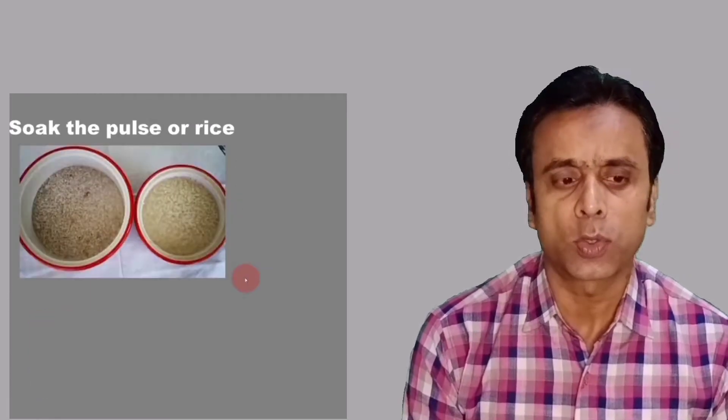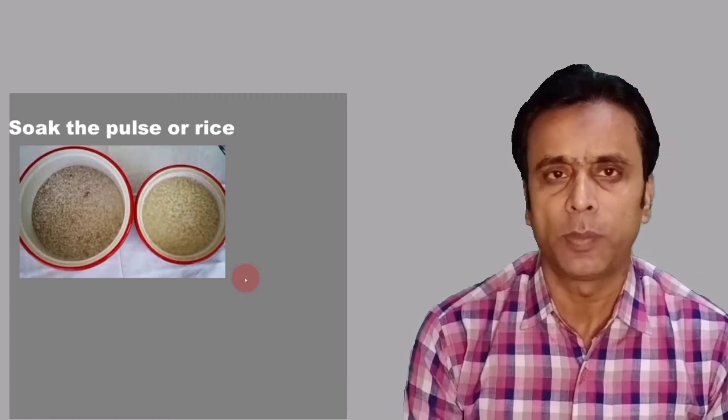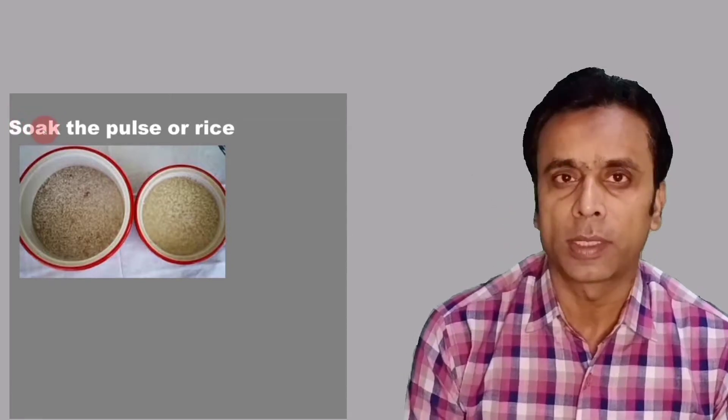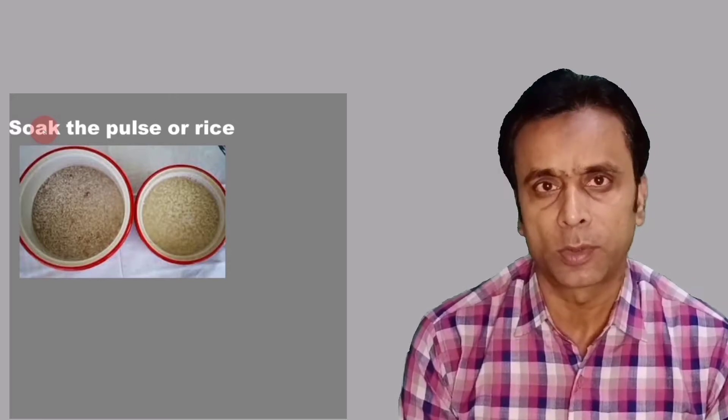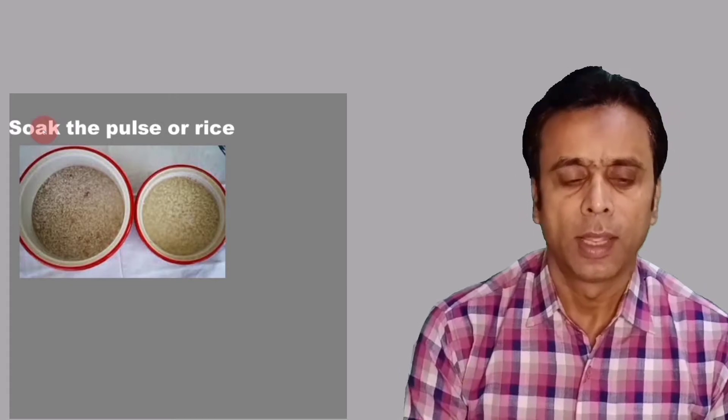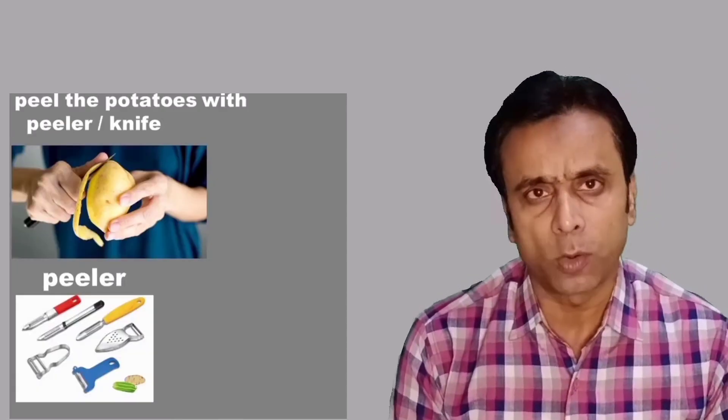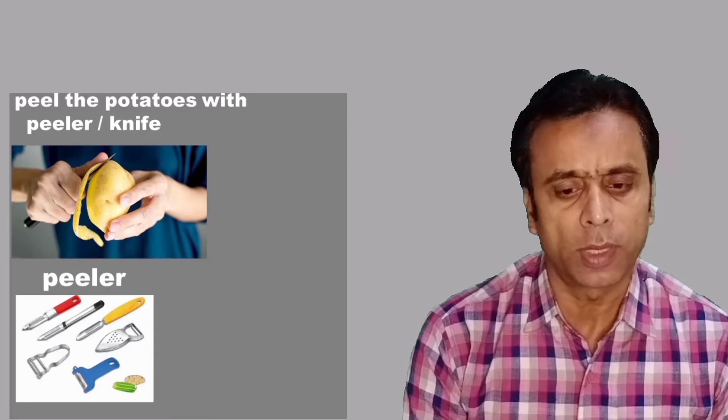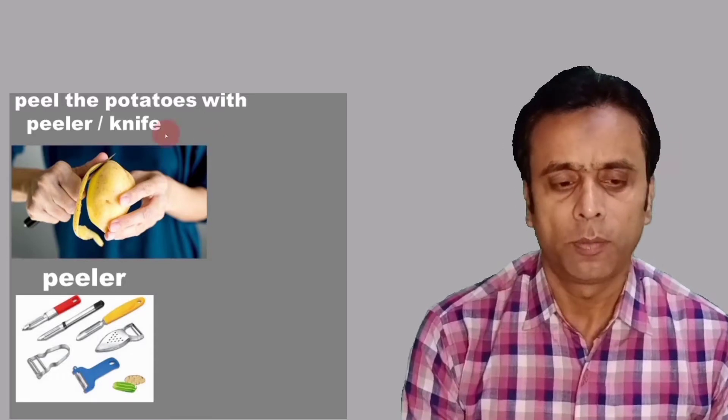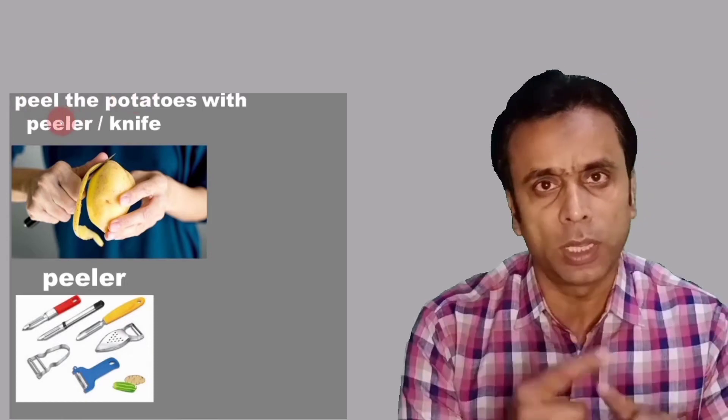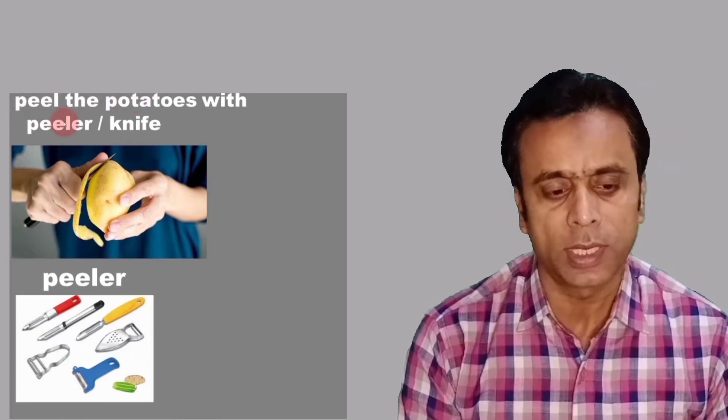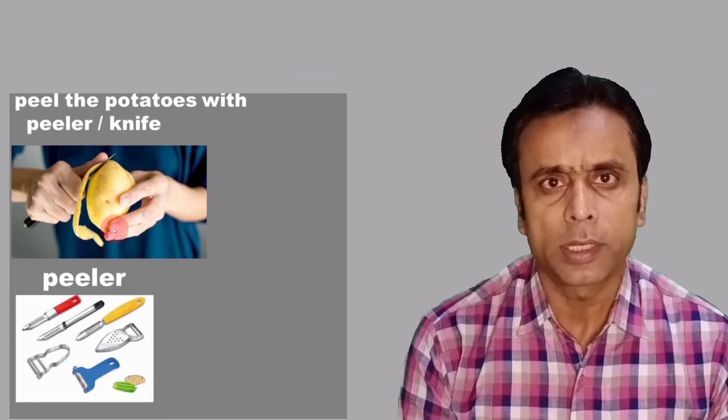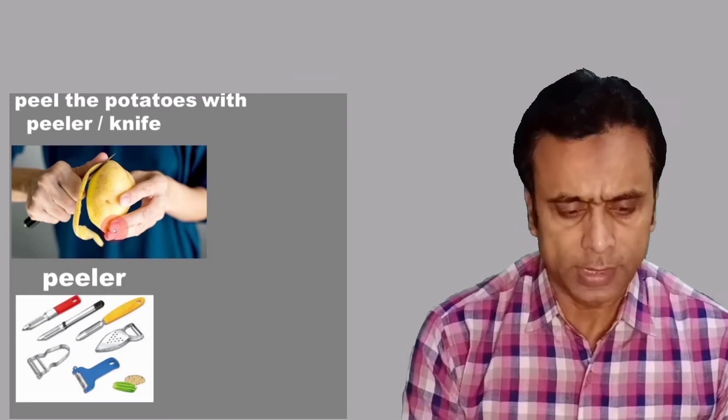We soak the pulse. We soak the dal or rice, whatever we are making. This is called soak - almonds you soak, clothes you soak in washing powder if you don't have washing machine. We peel the potatoes, whatever vegetables need peeling. Peel is also a verb. As you can see here on your screen, peel the potatoes with peeler. These are called peelers. It depends whether you peel with peeler or knife.